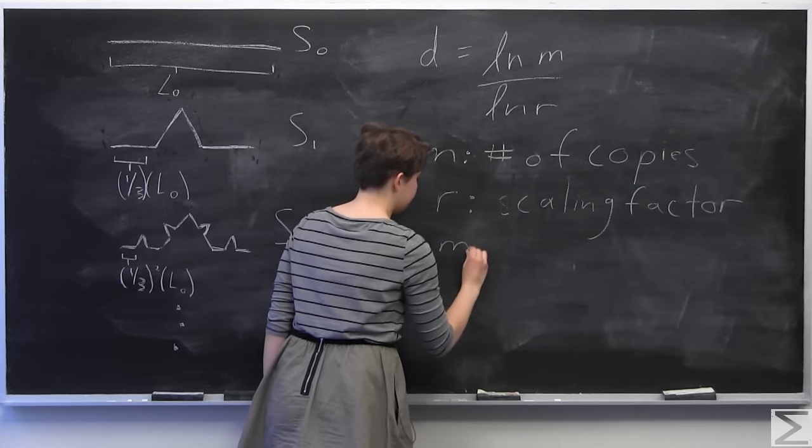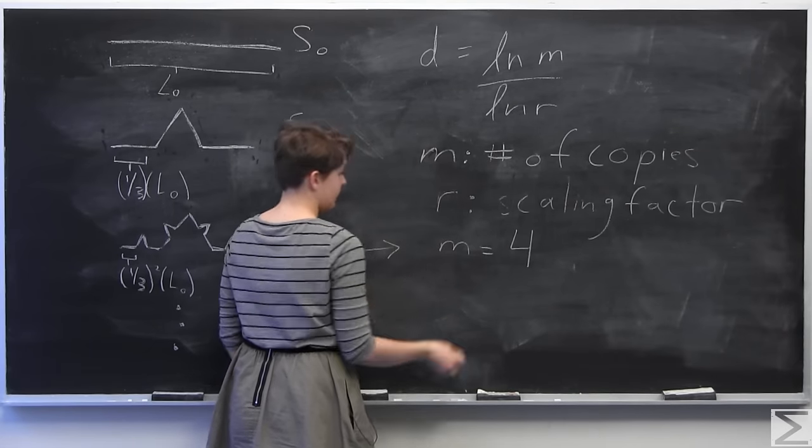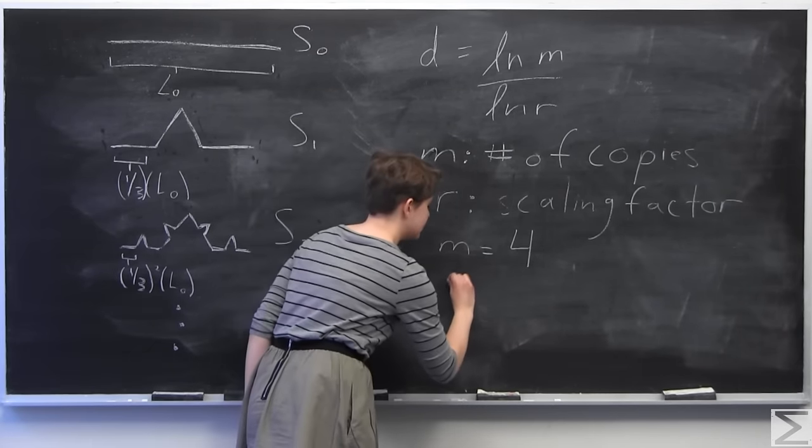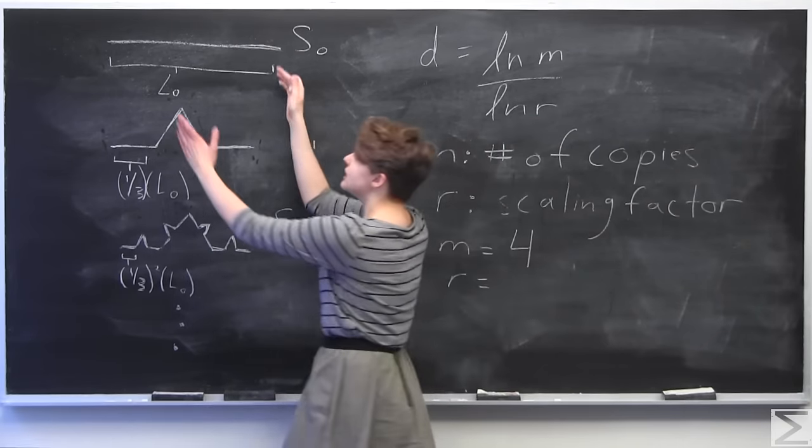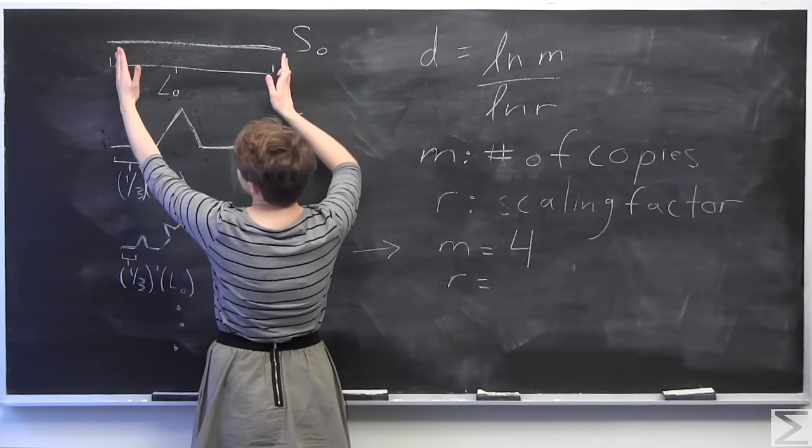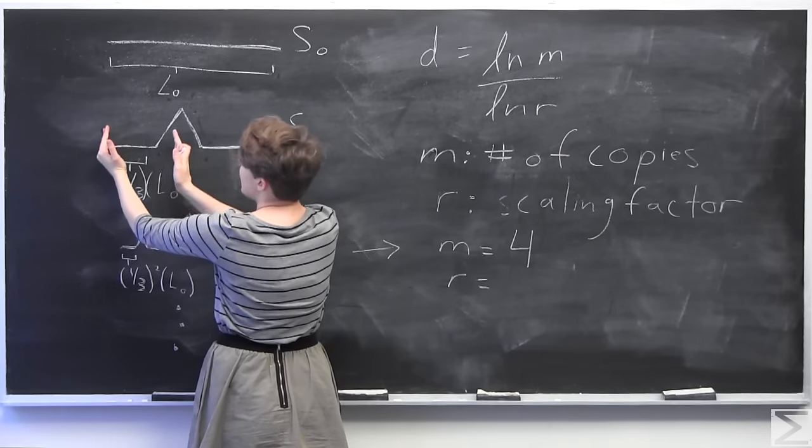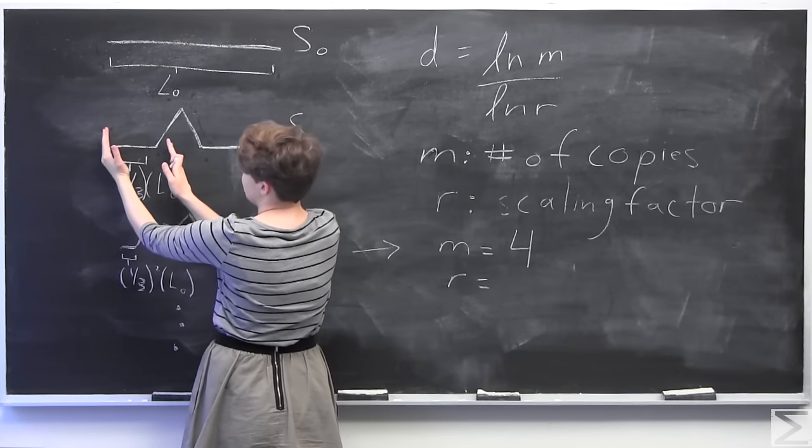So here, for this case, we have m equal to 4. And so now let's determine r, the scaling factor of this fractal. So consider this. It's easiest to consider the very first one, I believe. So we're looking at each copy of this one is scaled down by a factor of three, because it's one-third of the length.